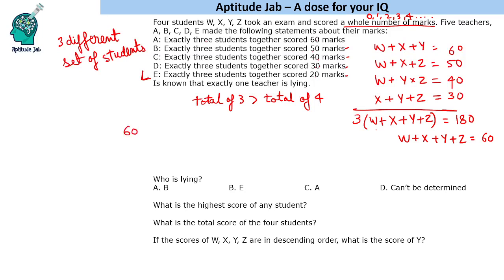A says exactly three students together scored 60 marks. So suppose A talked about WXY, the remaining person's score will be 0. B reported three students as 50, so 60 minus 50 is 10. C reported three students as 40, so 60 minus 40 is 20. D reported three students as 30, so the remaining will be 30.